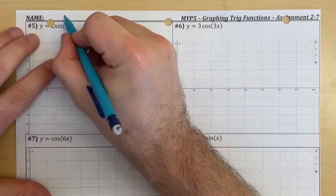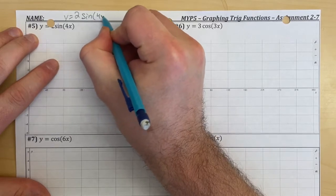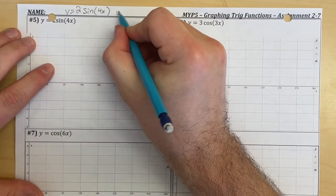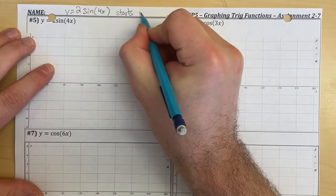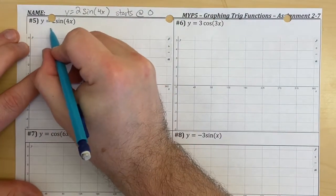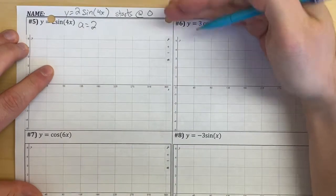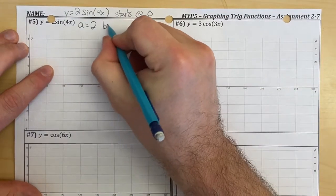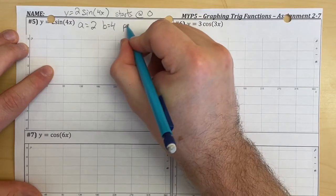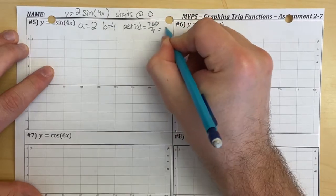We have y equals 2 sine of 4x — rewrite it if needed. We're working with sine so it starts at 0. Our value of a, our amplitude, is 2, so we go up to 2 and down to negative 2. Our value of b is 4, so we have 4 peaks, and our period is 360 divided by 4, which is 90 degrees.